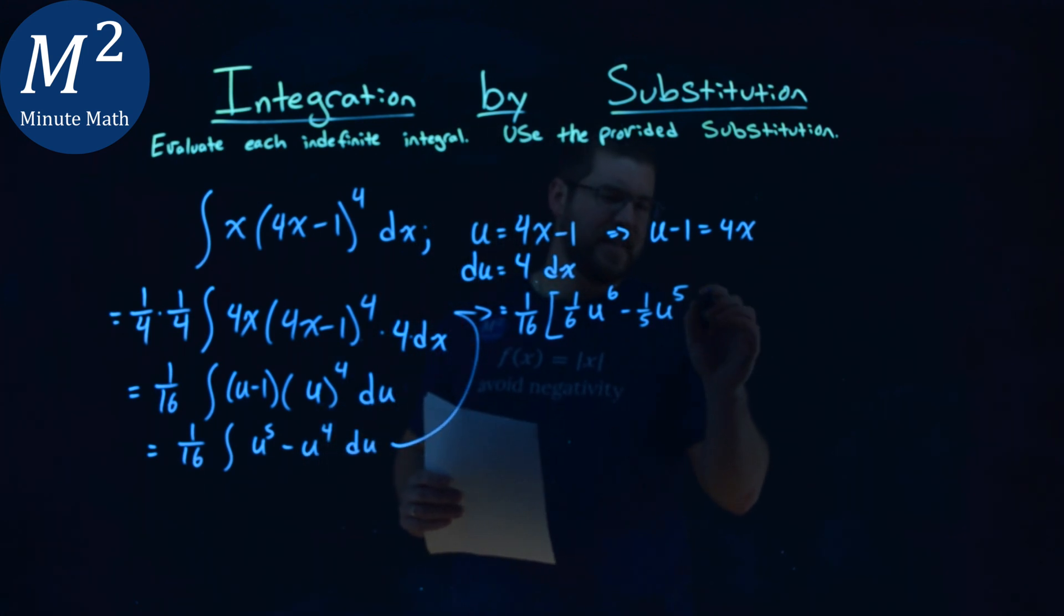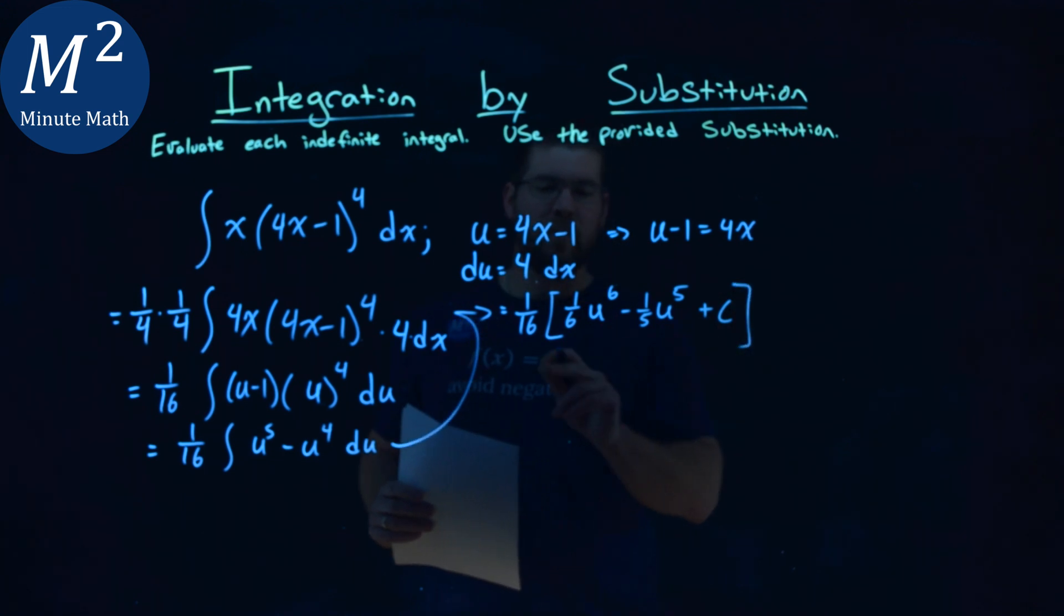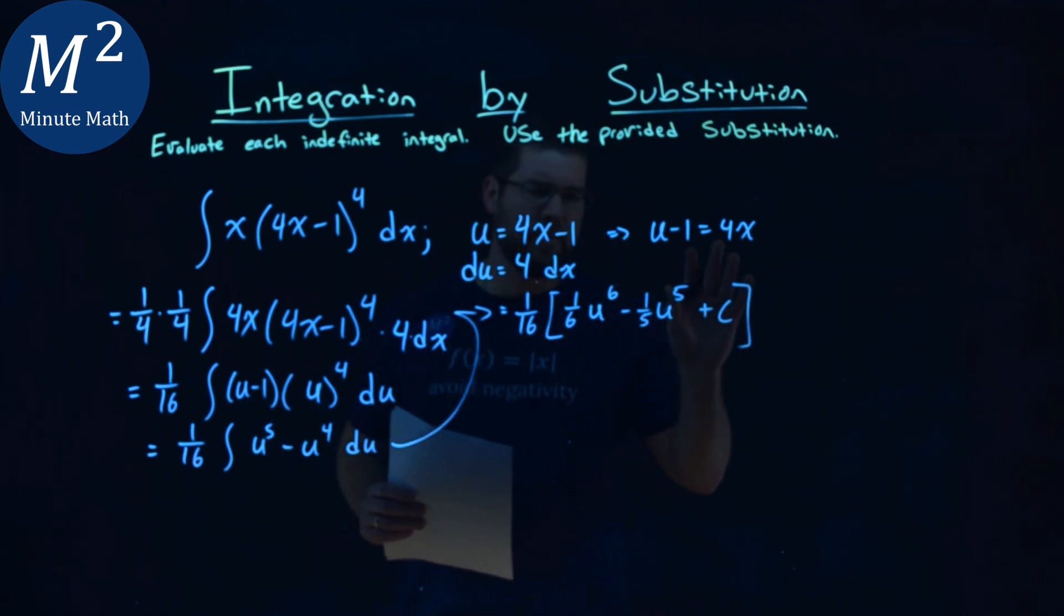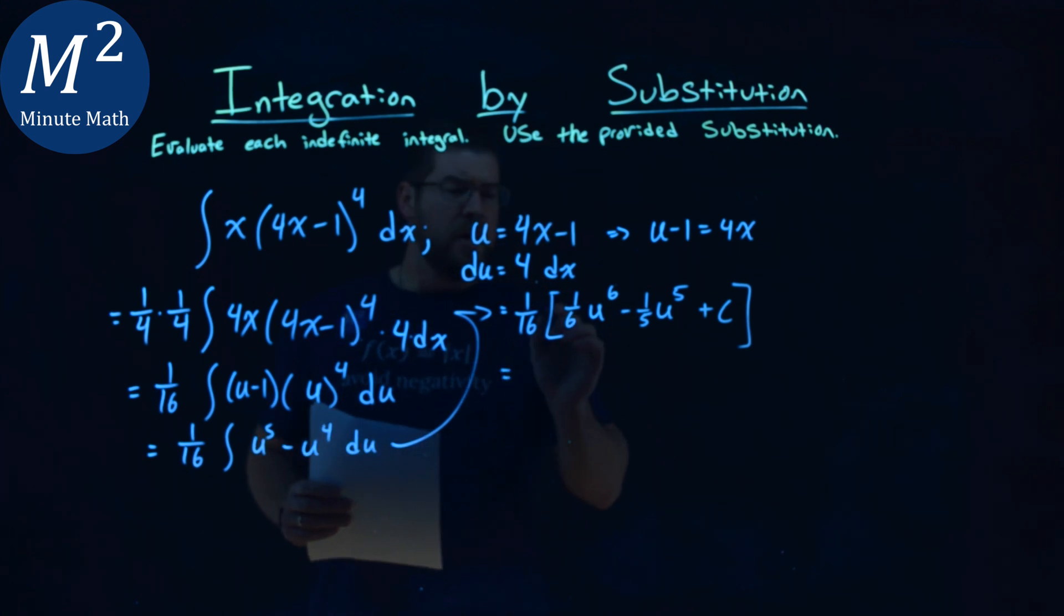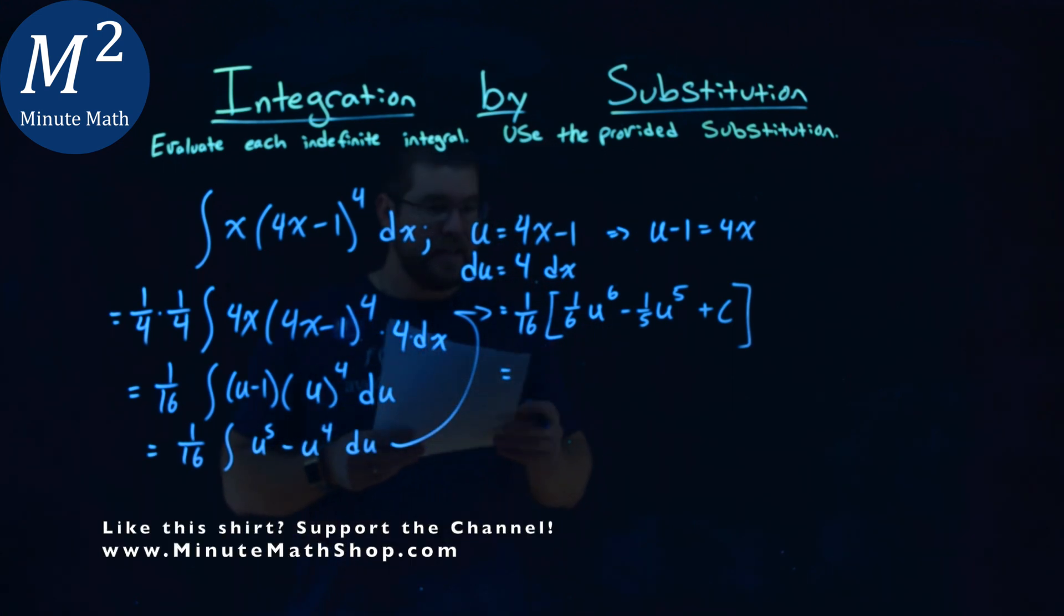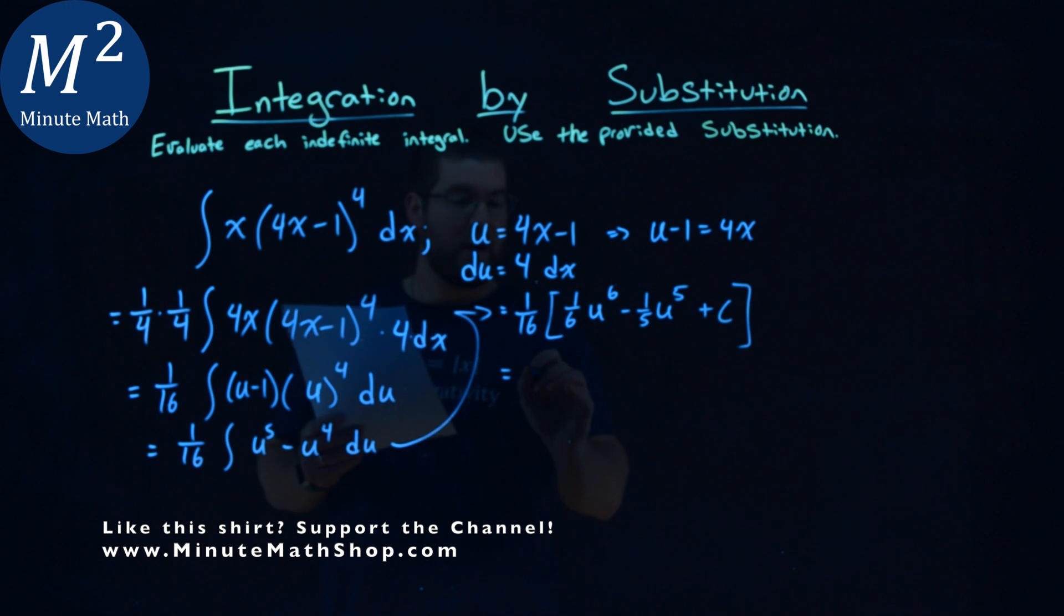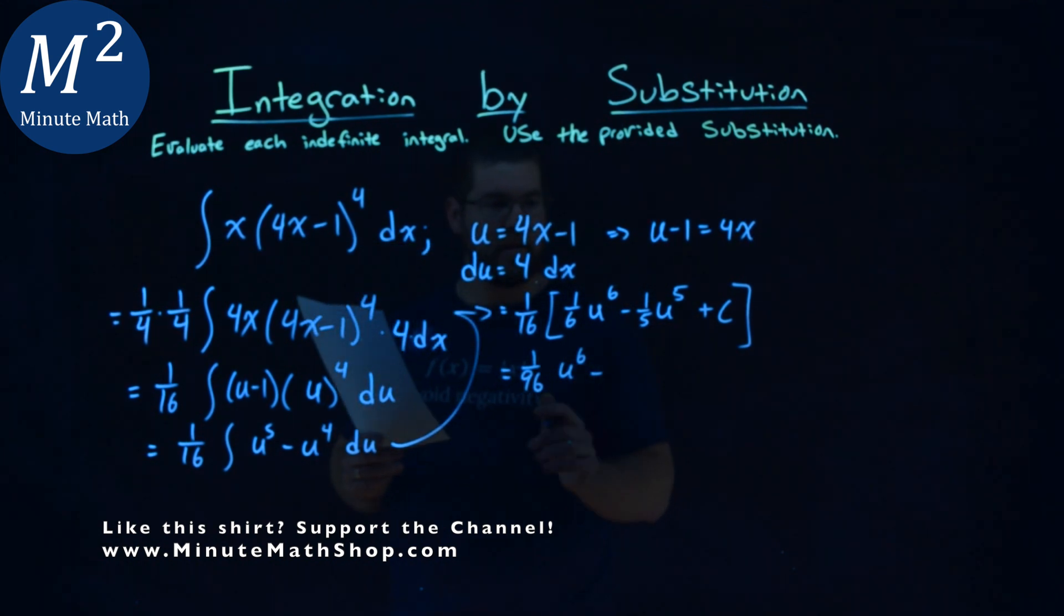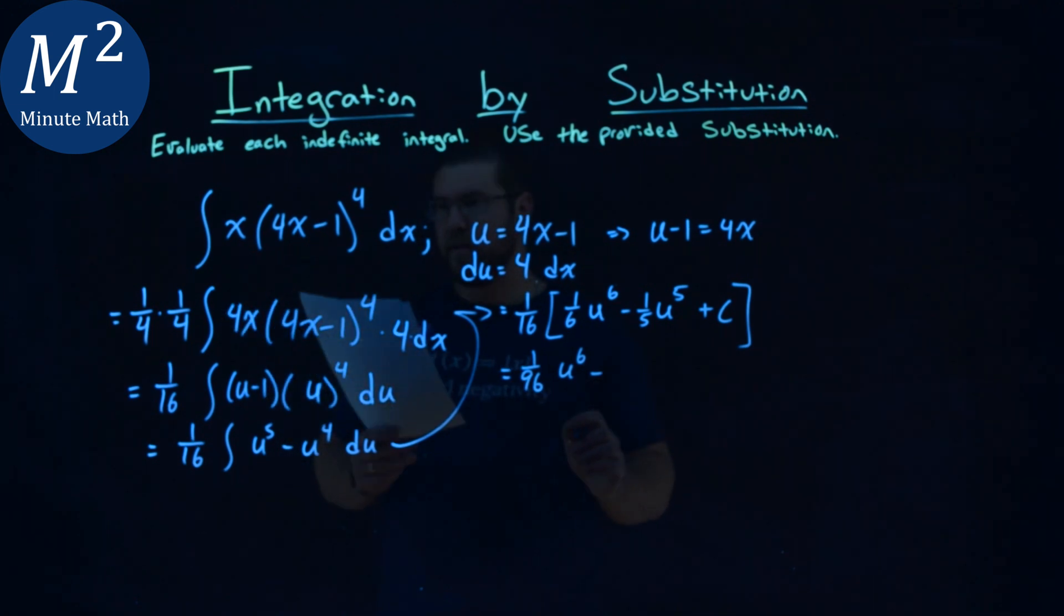And then, now you can put a plus c in there right now, and I could, I guess I'll do that, plus c here, and we're multiplying that 1/16th by it. Now, depending on how you want to do it, we'll talk about that in a second. Simplifying this out here, 1/16th times 1/6th is a 1/96, u to the 6th power minus 1/16th times a 1/5th is a 1/80th.